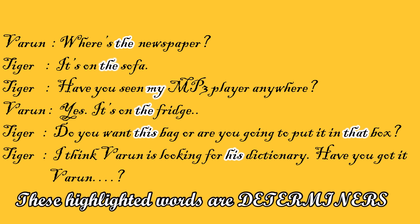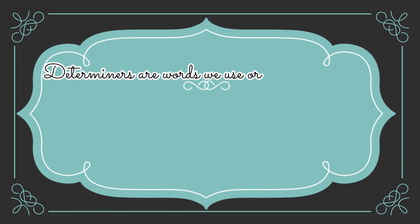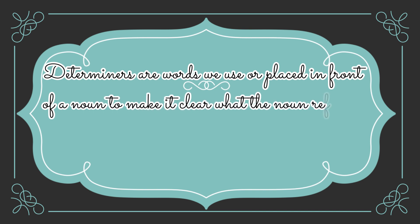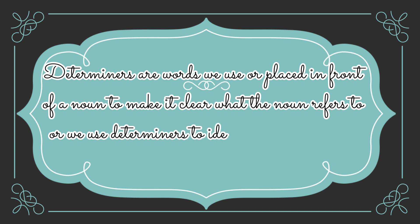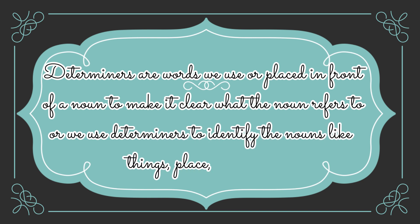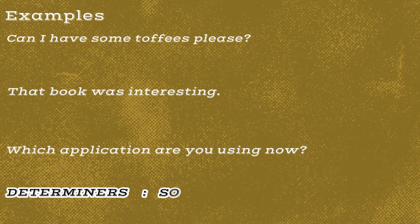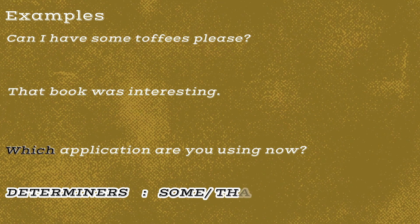Now the question is: what are determiners? I would like to answer this in the simplest and easiest way. Determiners are words we use or place in front of a noun to make it clear what the noun refers to, or we use determiners to identify the nouns — like things, place, person, etc. In these given sentences, the words like some, that, and which are examples of determiners, as they determine the meaning of the respective nouns.